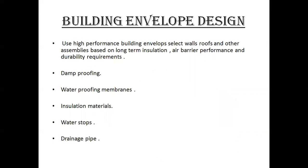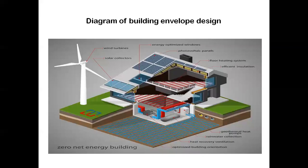The second design is building envelope design. It uses high-performance building envelopes such as wall roofs and other assemblies based on long-term insulation, air barrier performance, and durability requirements. Components include damp proofing, waterproofing membrane, insulation material, water stops, and drainage pipes. This diagram illustrates the practices used in this design, including wind turbines, solar collectors, energy-optimized windows, photovoltaic panels, floor heating systems, efficient insulation, geothermal heat pumps, rainwater collection, heat recovery ventilation, and optimized building orientation.